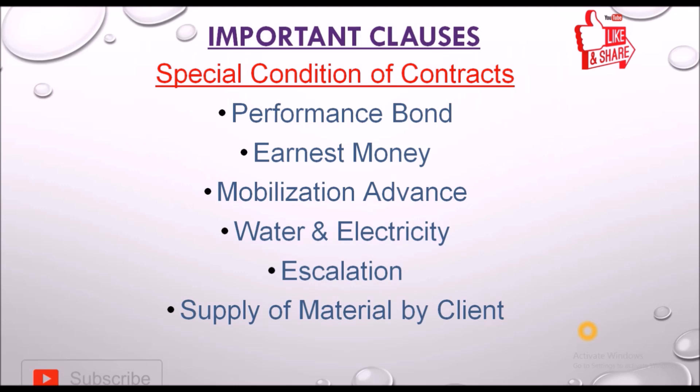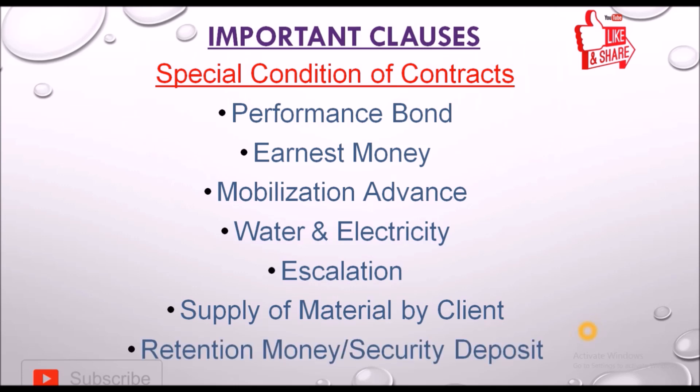Last but not least is retention money and security deposit. As explained earlier, during the defect liability period, the retention amount is withheld with the client for rectification of the work. If the contractor does not rectify the work during the defect liability period, this security amount is used for that purpose.